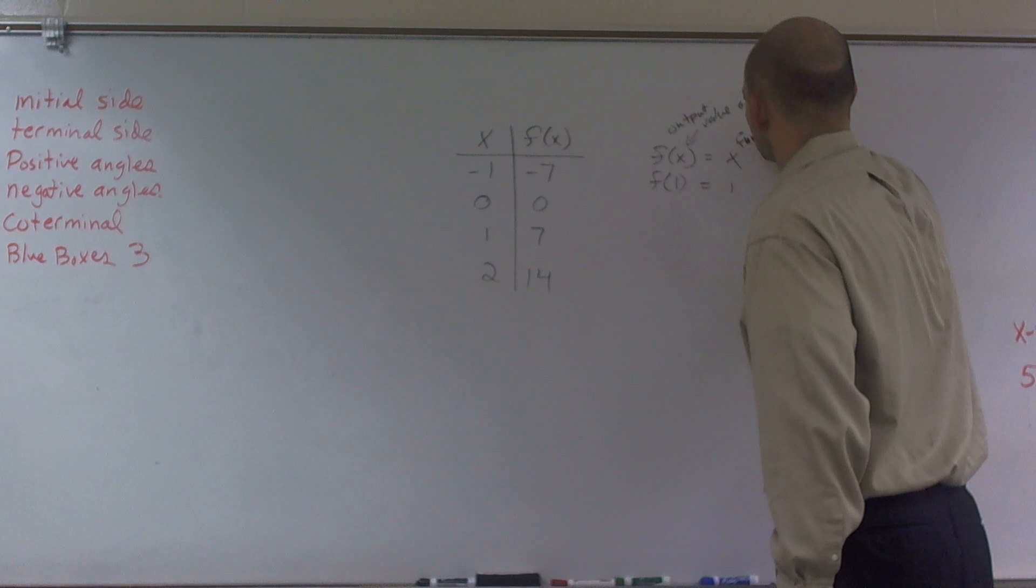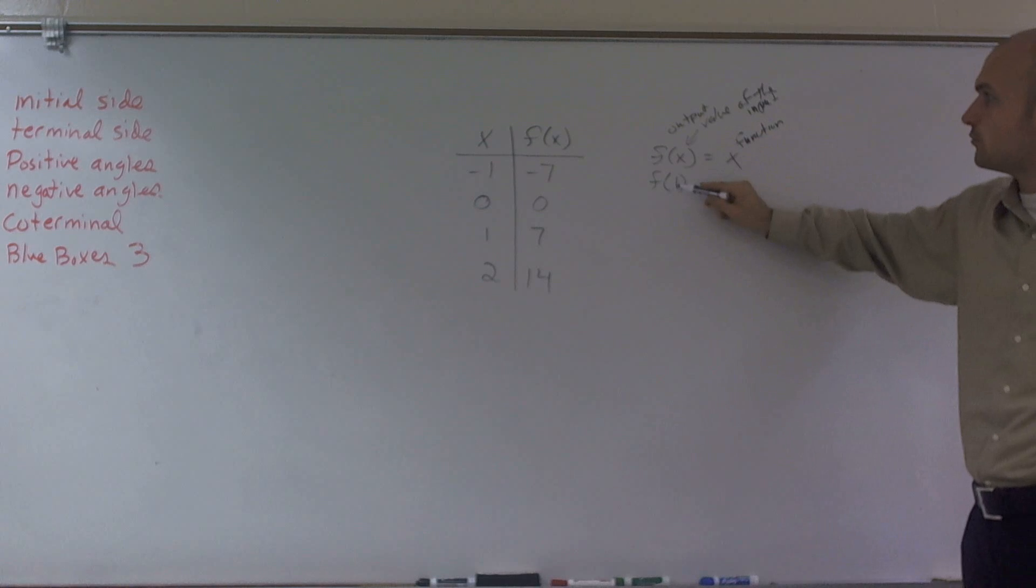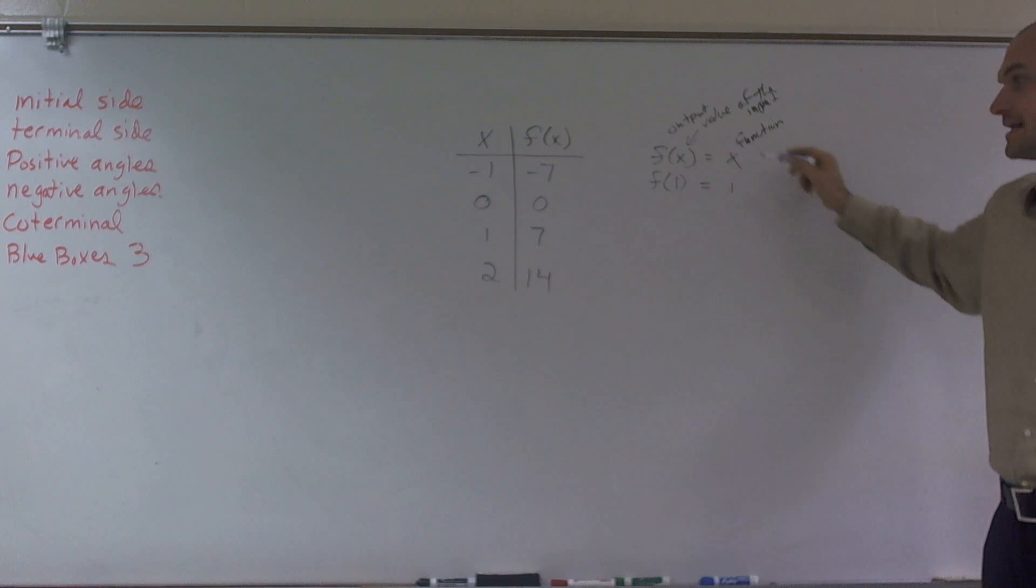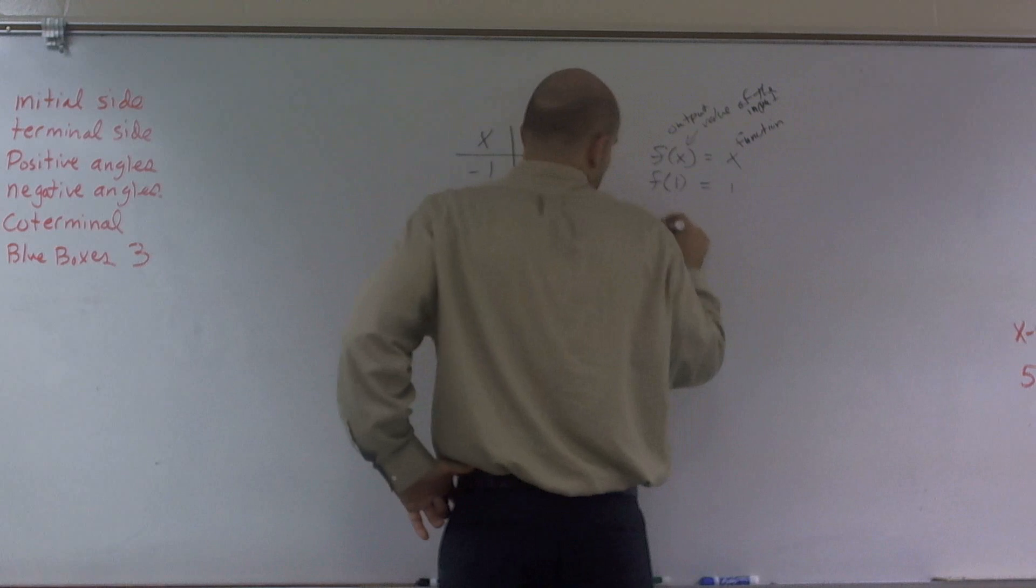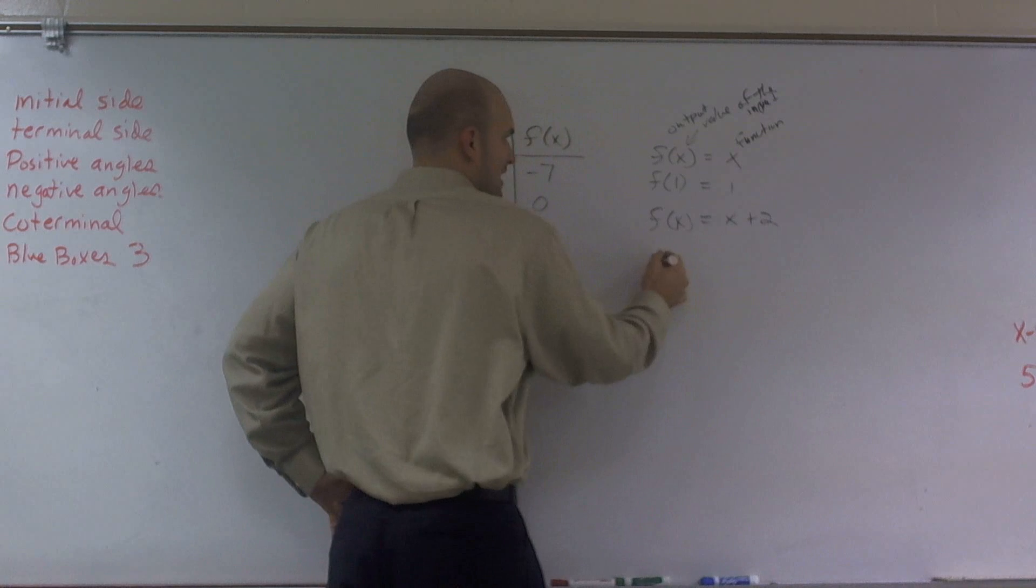This is really what we call just the function, but it's also called the input part of the function. But if I plug in 1, which is my input, I'm going to get out 1 for this function. But if I said, let's say f of x equals x plus 2, and then I plug in a 1,